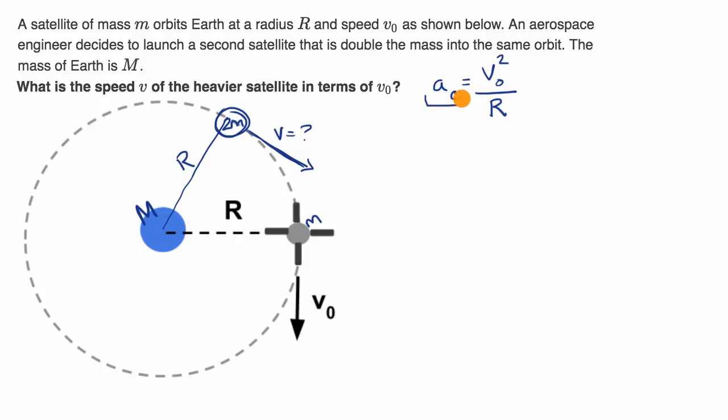But what determines our centripetal acceleration? We can explore Newton's law of gravitation. The magnitude of the force of gravity is equal to g, the universal gravitational constant, times the product of the two masses that have the force between them, the product of the mass of Earth capital M and the mass of this satellite, divided by the distance between their center of masses squared. In this case that is R, capital R, squared.